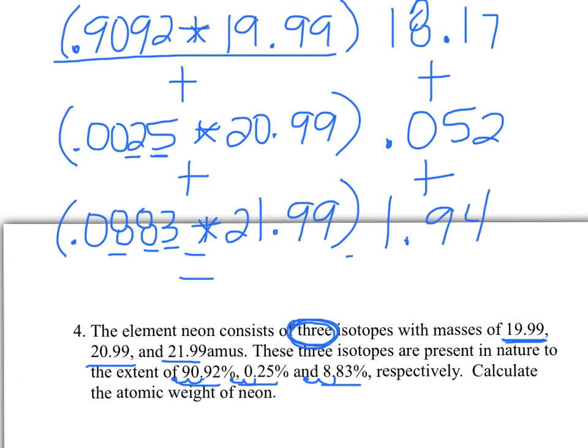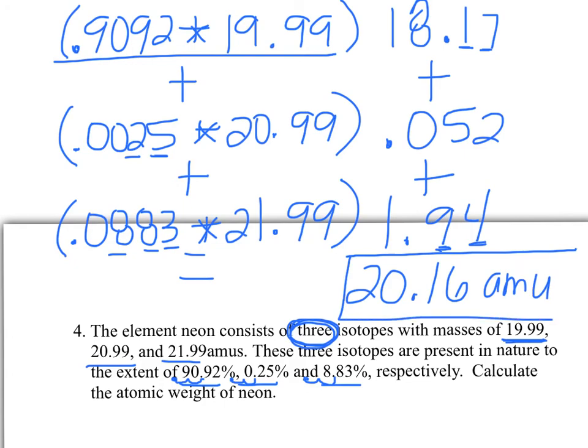So all we have to do is add those all up and that'll get us our final answer. When you're adding up numbers, we can't have any more decimal places in the lowest number in the problem. So I only have two decimal places in these two numbers. So we're going to round this answer to 20.16. And don't forget your units. That is atomic mass units.